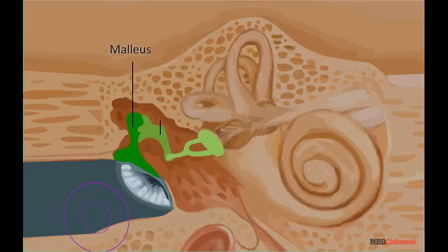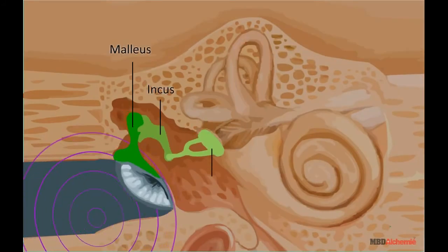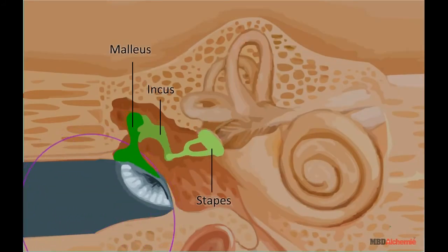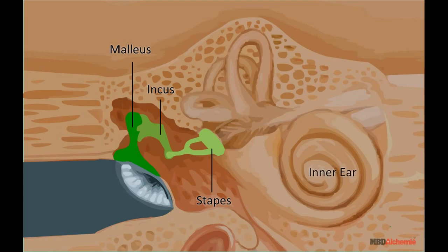The auditory ossicles, being the smallest bones in the body, are named according to their shape: the malleus (hammer), incus (anvil), and stapes (stirrup). The ossicles transmit the vibrations from the tympanic membrane to the inner ear.